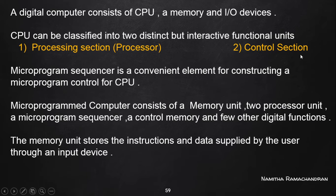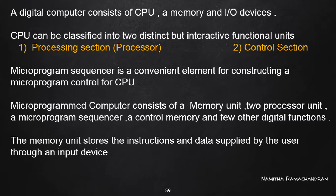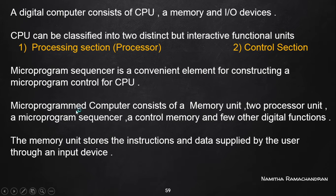A microprogram-based computer consists of a memory unit, two different processing units — one is an address processor and the other is a data processor — a microprogram sequencer, and a control memory, which form part of the control section, along with a few other digital functions. These are the units needed for the organization of a microprogrammed computer.